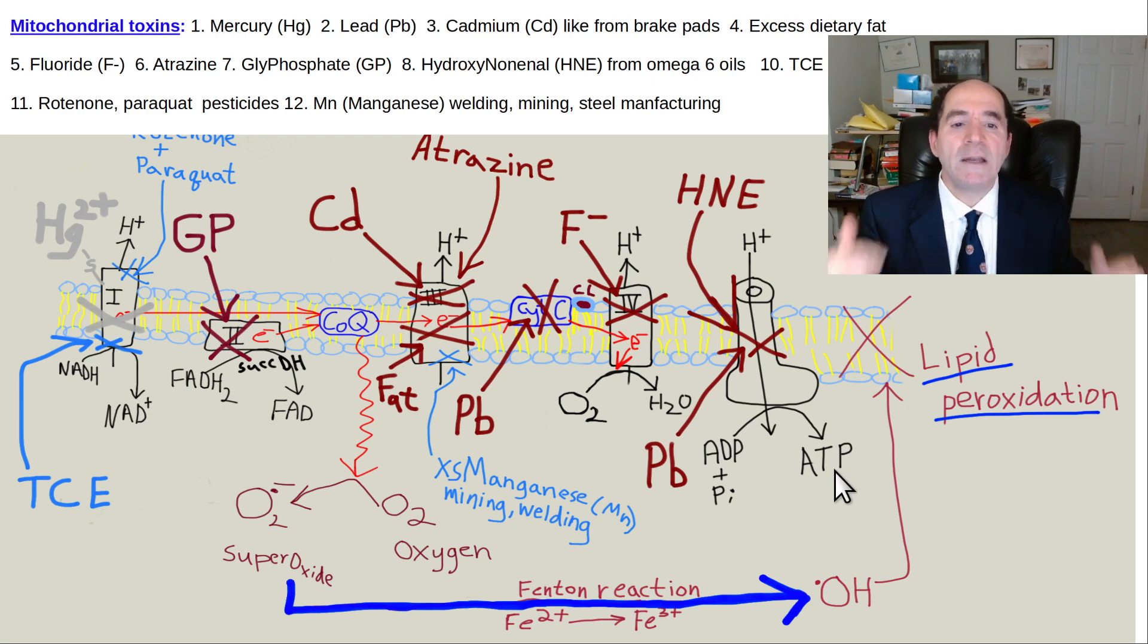It's a really big deal, mitochondrial function, because inhibition of the mitochondria causes cancer, it causes aging, and it also causes Parkinson's disease. And it makes you stupid. It causes neurodegeneration.